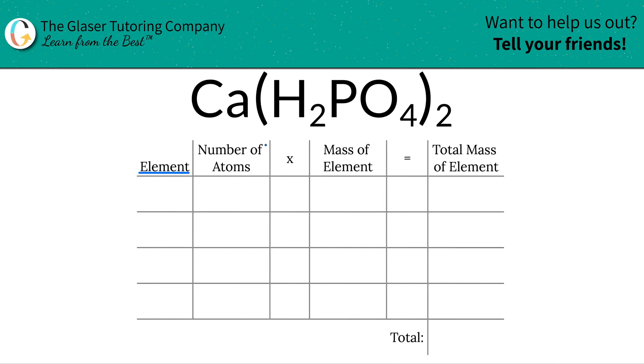So the first thing we have to do is identify the various elements in this compound. I see I have an element of calcium, I have hydrogen, I have phosphorus, and I have oxygen. So you're basically just labeling the elements that you see.